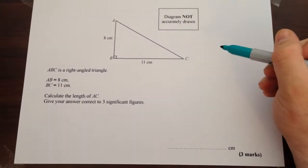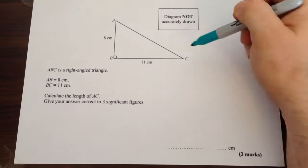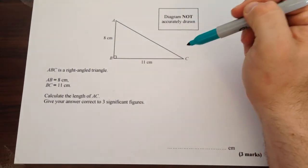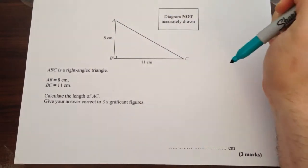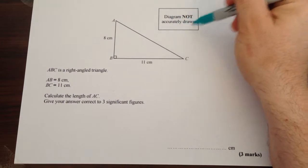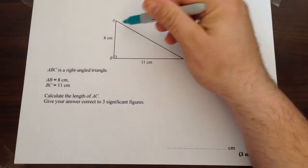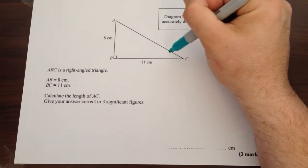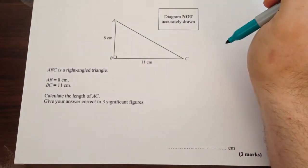Here we have a fairly standard looking triangle question. We've got a triangle ABC where AB is 8cm, BC is 11cm. We've noted the diagram is not drawn accurately, which means you can't measure with a ruler AC and you can't measure with a protractor any of the angles.